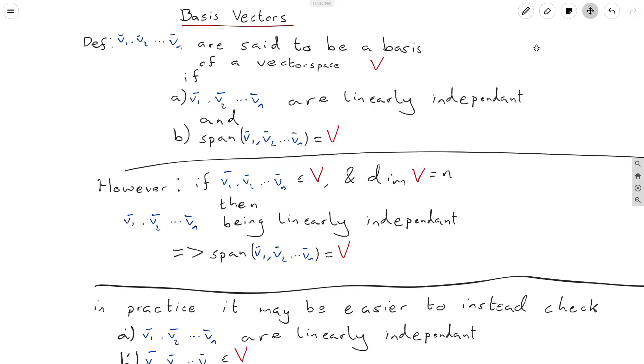Okay, so the first thing I've written up here is the standard definition of a basis for a vector space. We say that if we have vectors v1, v2 up to vn, we say that they are a basis of a vector space V if the two following conditions hold, and they both have to hold. If one of them fails, then this collection is not a basis.